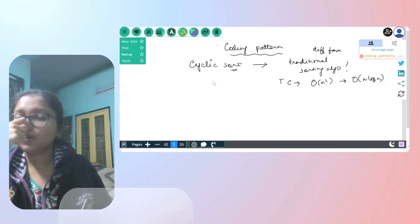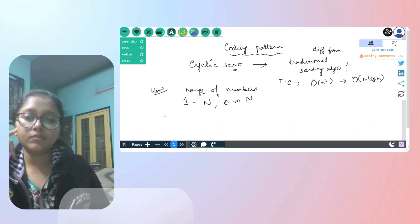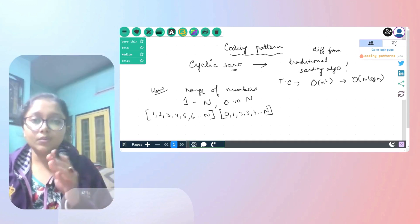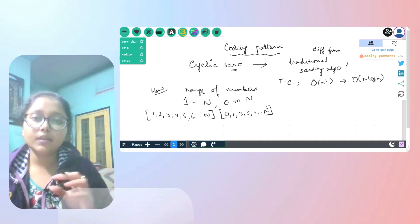In case of cyclic sort, what happens is, there is a range of numbers which is given to us. When I say range of numbers, I mean it can be something from 1 to n, or it can be from 0 to n. So you can have numbers which are something like 1, 2, 3, 4, 5, 6 till n, or we can have 0, 1, 2, 3, 4, 5 till n. Now, at any given point in time, it is not necessary that all the numbers will be present in the given array. But if at all, it has to start from 0 or 1, and it has to continue till given n. n is going to be the length of the array.